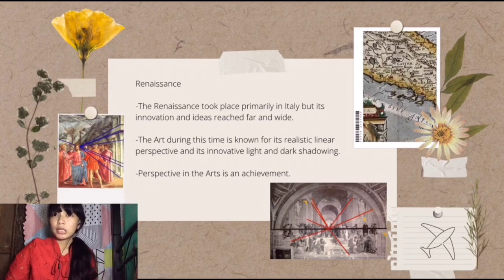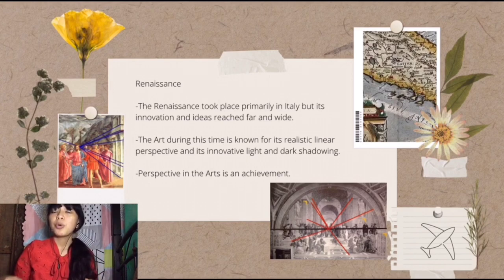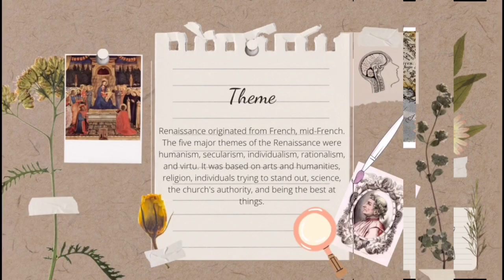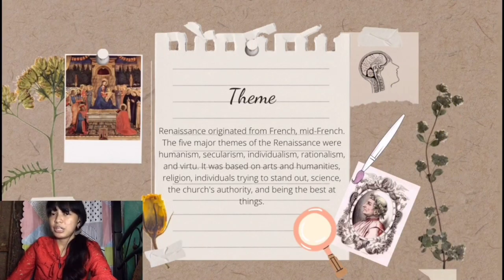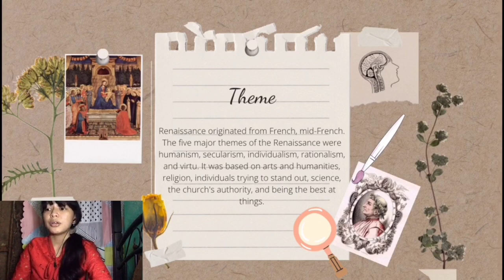Perspective in arts is drawing solid objects on a two-dimensional surface so as to give the right impression of height, width, depth, and position in relation to each other when viewed from a particular point. The five major themes of Renaissance were humanism, secularism, individualism, rationalism, and virtue.